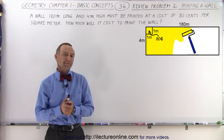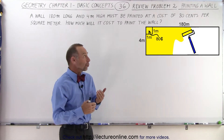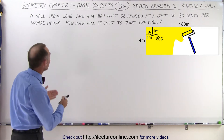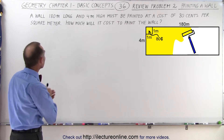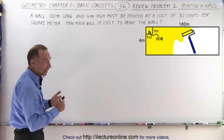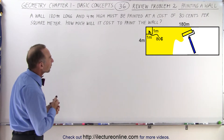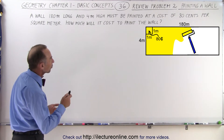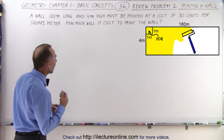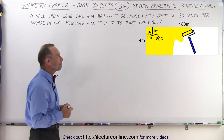Welcome to Electro Online. Our next example problem deals with painting a wall. The size of the wall is 180 meters long and 4 meters high, so it's in the shape of a rectangle. We're told that the cost to paint is 80 cents per square meter. How much will the total cost of painting the wall be?